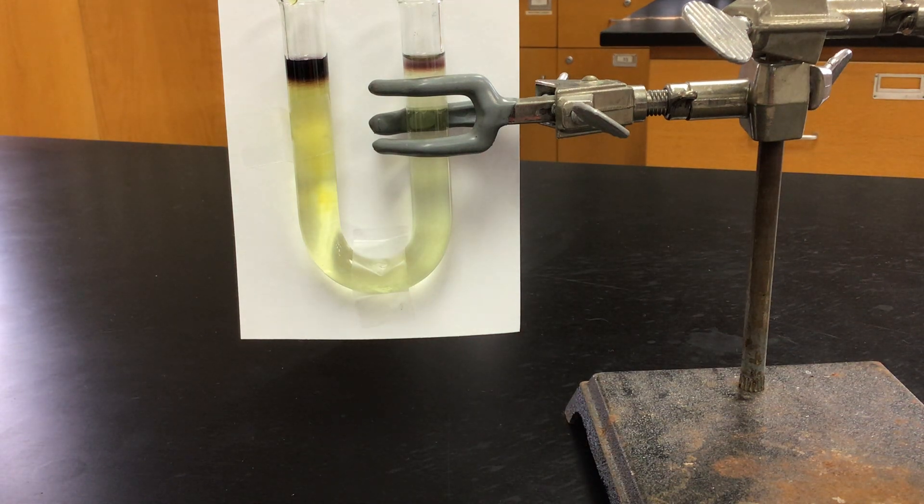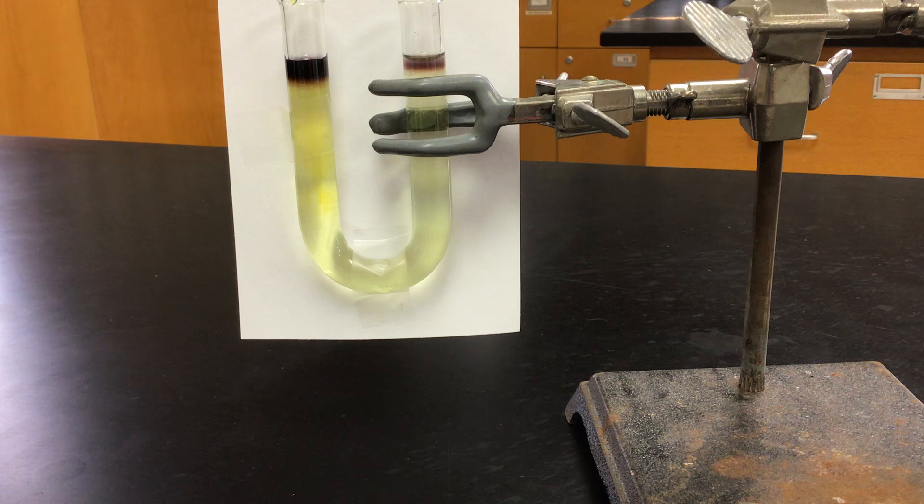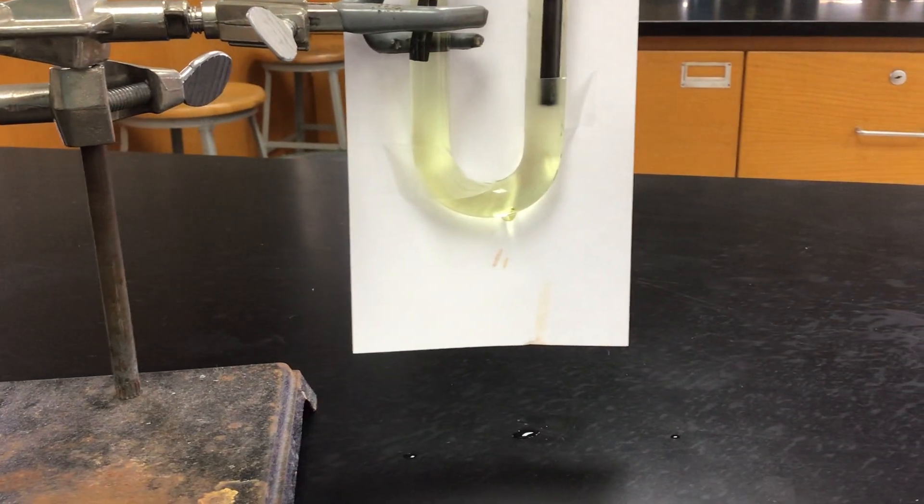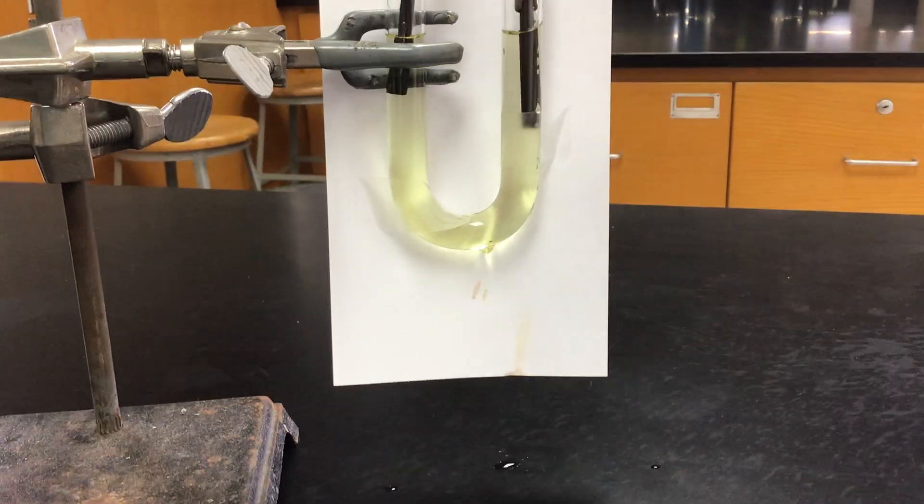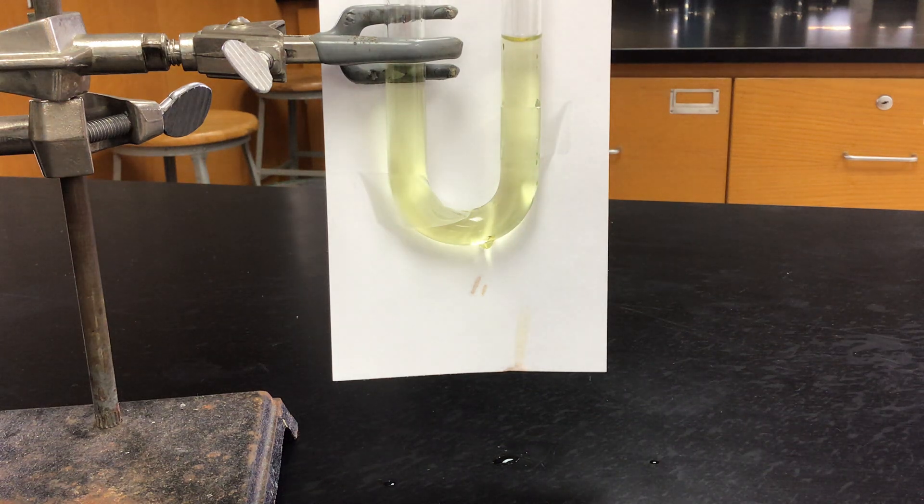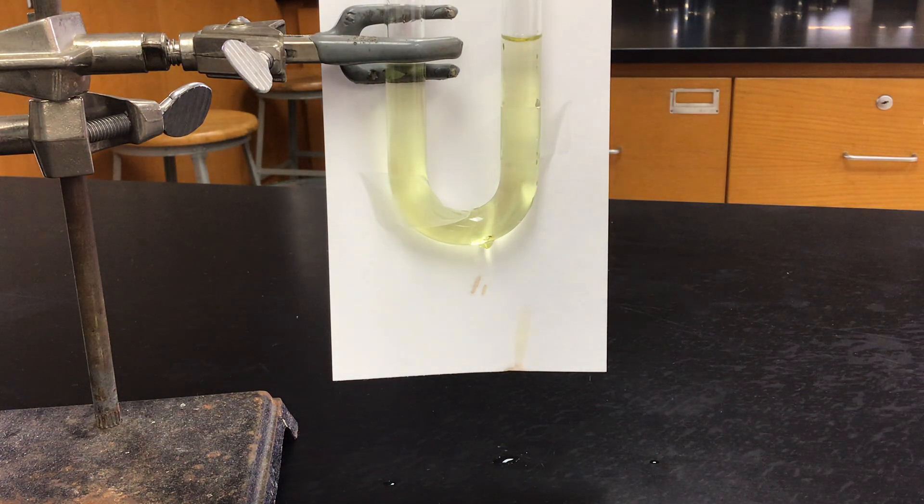For the second part of this, we're going to be testing the pH. And so for that, I've got some universal indicator that I'm going to add to the other U-tube that's been reacting over here while we were testing the other U-tube. I'm going to scooch this over. We've got our other U-tube here.